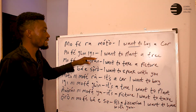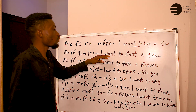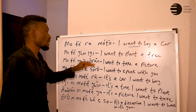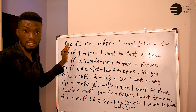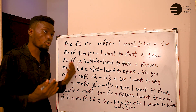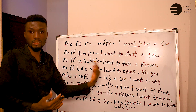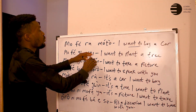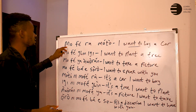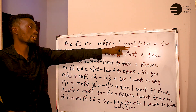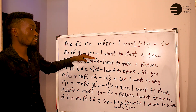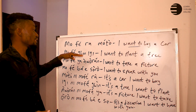'Mofe be igi' — 'be' means 'to plant,' so 'mofe be igi' is 'I want to plant a tree.' But if it is 'we want to plant a tree,' it should be 'a fẹ be igi.' If it is 'you want to buy a car,' it should be 'o fẹra moto.' And if it is 'we want to plant a tree,' it is 'a fẹ be igi.'